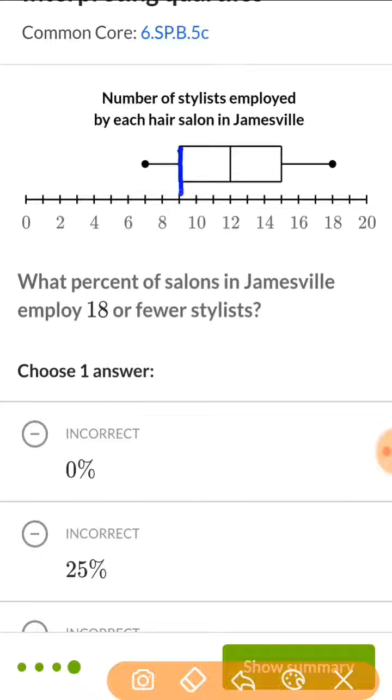So at quartile 1, that just means 25% is less. And then 75% must be more. At quartile 1, at the median, that must mean that 50% is less and 50% is more.